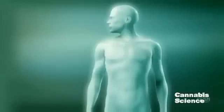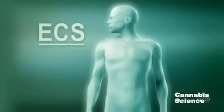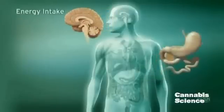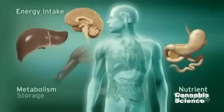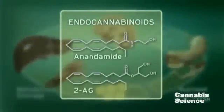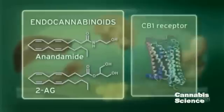The endocannabinoid system, or ECS, influences multiple physiologic processes. This intricate system modulates energy intake, as well as nutrient transport, metabolism, and storage. The ECS regulates these processes through endogenous ligands, such as anandamide and 2-arachidonylglycerol, and the CB1 receptor.